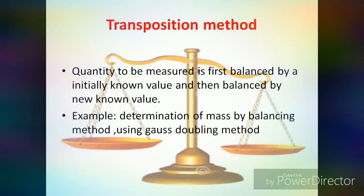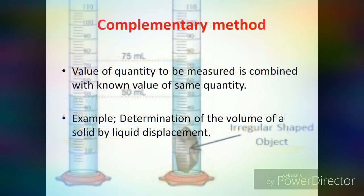Next is the Transposition Method. It is a method of measurement by direct comparison in which the quantity to be measured is first balanced by an initially known value and then balanced by a new known value. Example: determination of a mass by means of a balance and known weights, or using the Gauss doubling method.